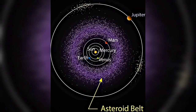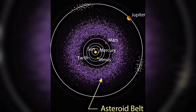Let us study this picture. As you can see, asteroids originate from the main asteroid belt between Mars and Jupiter. This belt is theorized by scientists to be remnants of a planet that did not completely form.